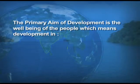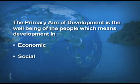The chapter I'm going to take up today is for the students of Class 12 from the book of Geography: India People and Economy. The name of the chapter is Human Development. The question arises: what do we mean by the word development and what is the aim of development? The primary aim of development is the well-being of the people, which means development in all three spheres — economic, social, and cultural.